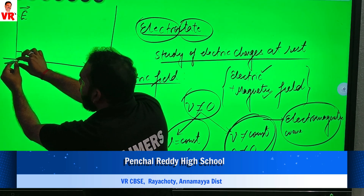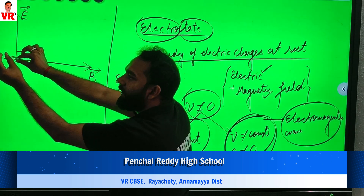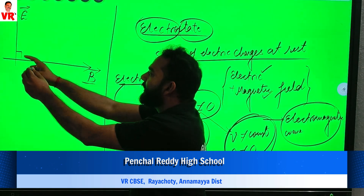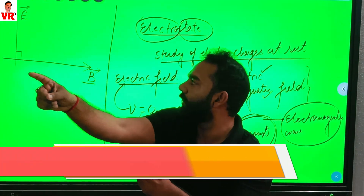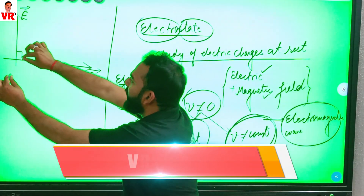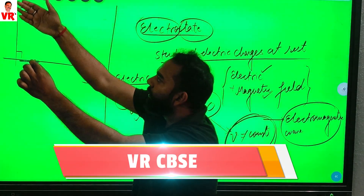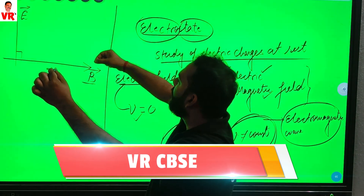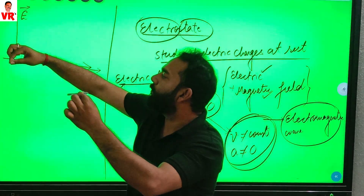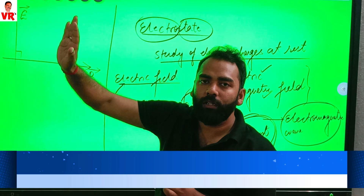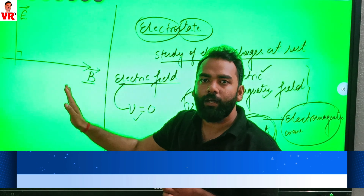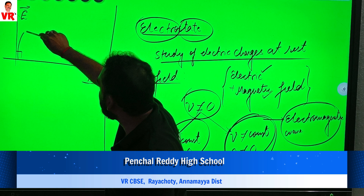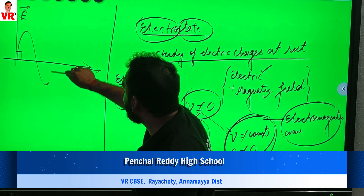Both the electric and magnetic fields are propagating in the outward direction, perpendicular to the plane. The varying electric field, the varying magnetic field, and the direction of propagation are all three perpendicular to each other. This combined effect is called an electromagnetic wave.